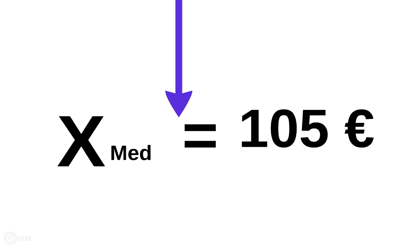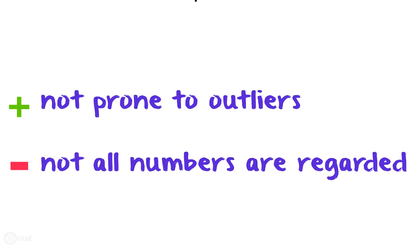A big advantage of the median is that, in contrast to the mean, it is not prone to outliers, since the numbers are arranged first and only the middle value is considered. Therefore, a significantly more expensive smartphone priced at 300 euros would not change the median, as it would not be located in the middle of the series. However, a disadvantage of the median is that not all numbers are regarded during its calculation, making it less representative of the whole statistical series.